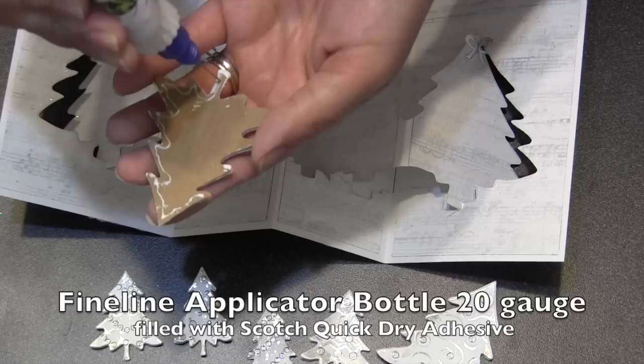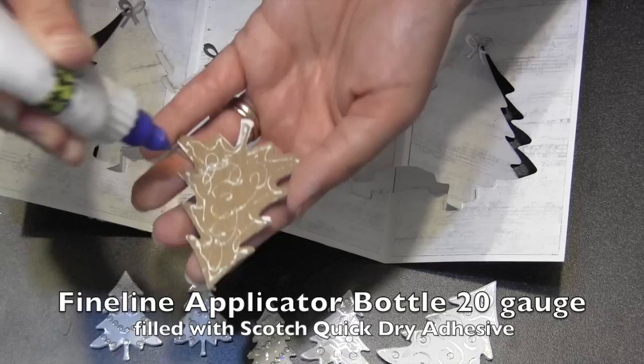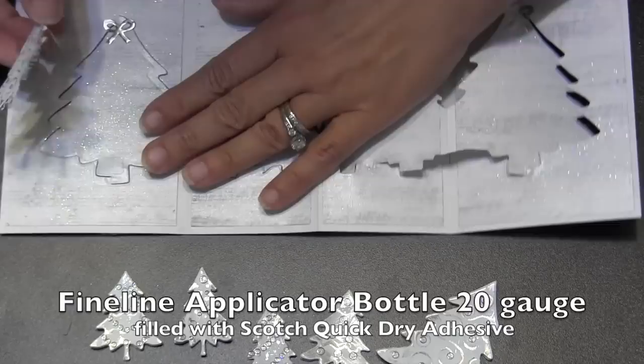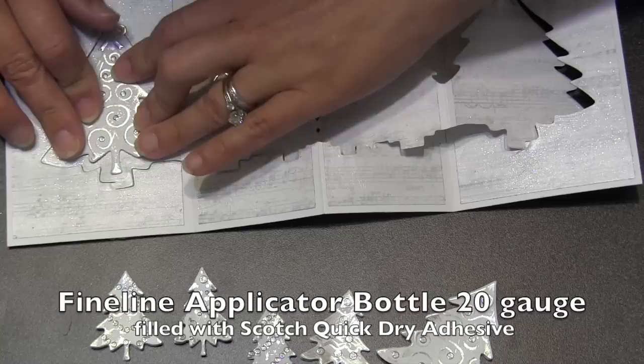I get a lot of questions about where to find the fine line applicator bottles, and they do come empty and then you'll fill them with your favorite glue. My favorite glue in them is the Scotch quick-dry adhesive. Now I'm going to suggest you just go to your local craft store. No matter where you are in the world, they should be able to order from Notions, which is an international distributor, and Notions does carry the fine line bottle.